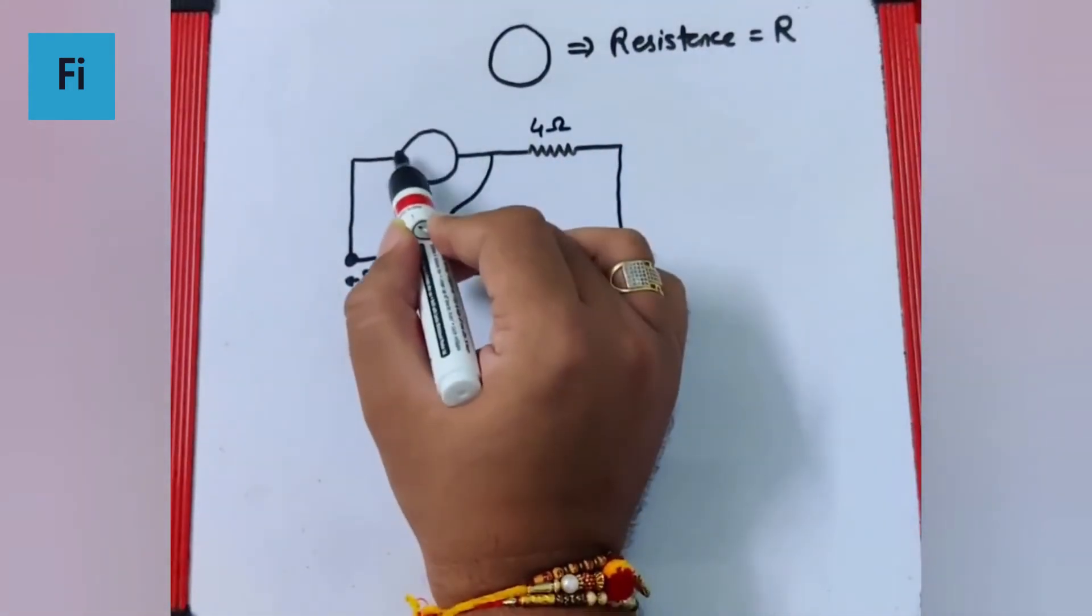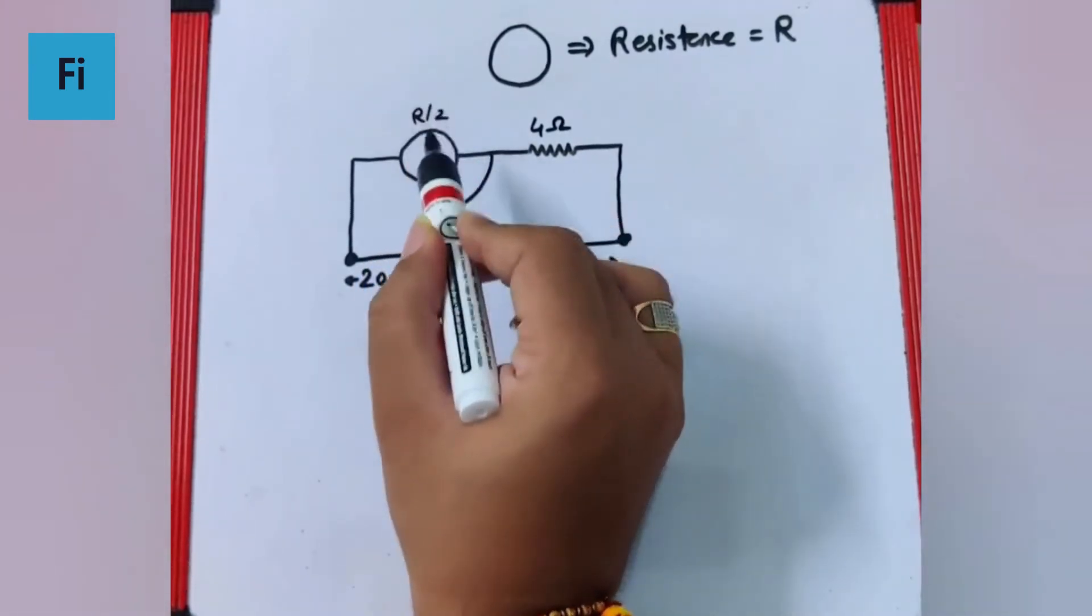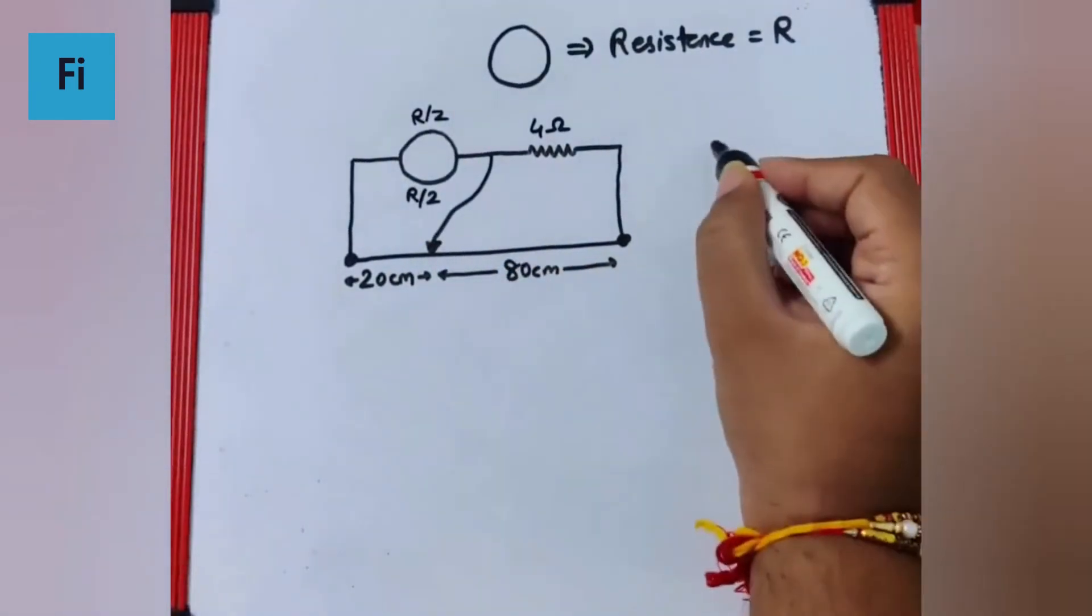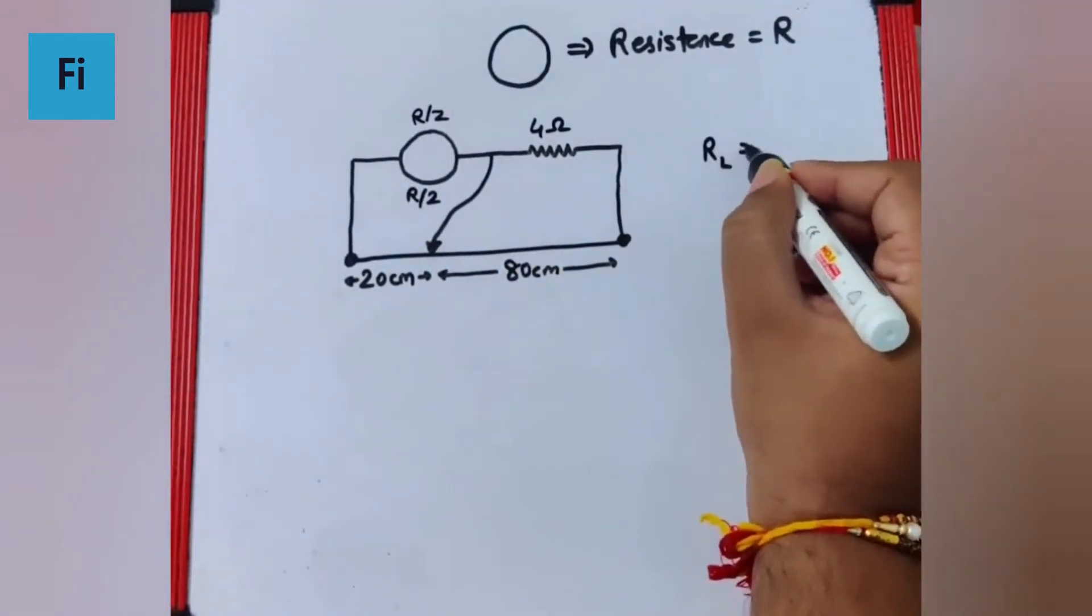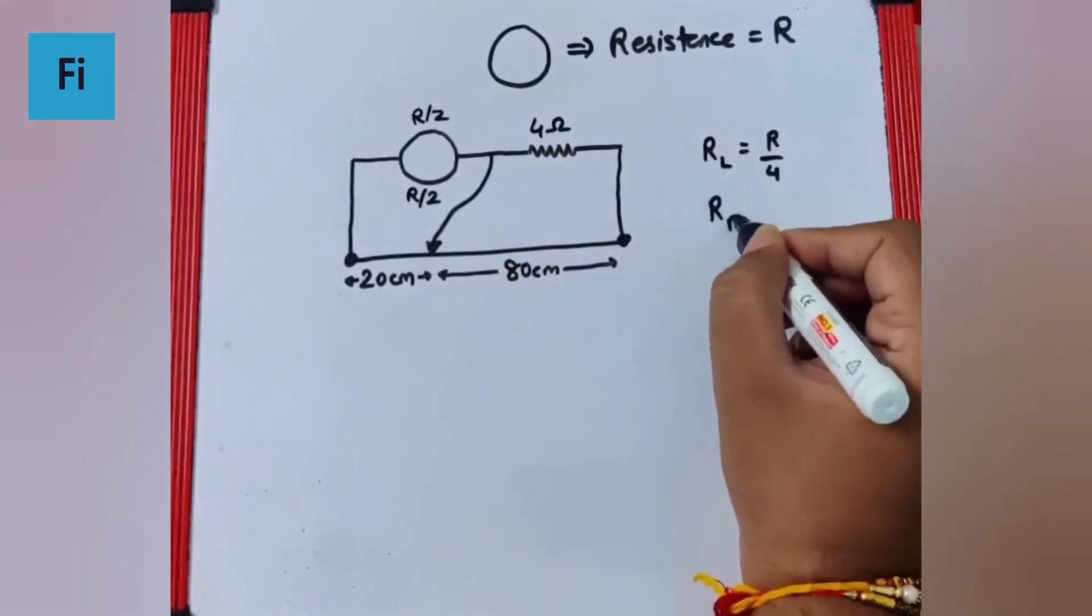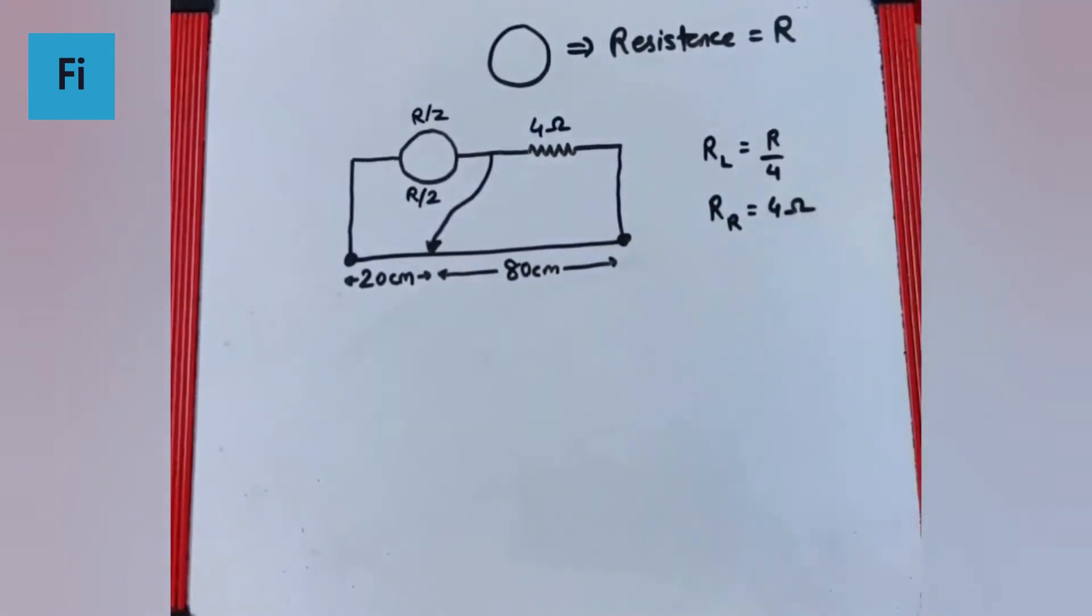But at the same time, if the entire resistance is R, try and understand this upper part is R by 2 and the lower part is R by 2. That means the resistance in the left gap is R by 4 and the resistance in the right gap is 4.